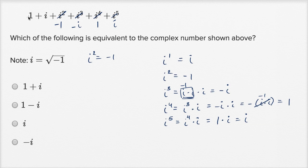So we have a one minus one, so this and this are going to cancel out. Then we have an i and a negative i. So i minus i, that's going to be zero. And all we're left with is a one plus an i. So that's this choice right over there.